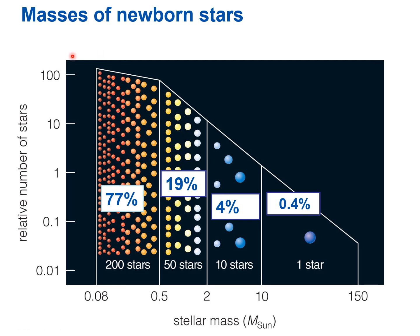Back to Chapter 16, most stars are low-mass stars. About 77% plus 19% — roughly 96% of stars — are low-mass stars. Intermediate-mass stars between two and eight solar masses make up about 4% of stars, and a very small minority — about 0.4% — are high-mass stars. So this video is really talking about a very small minority of stars.